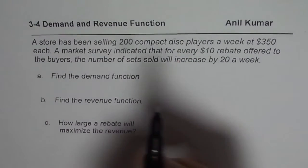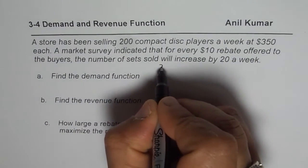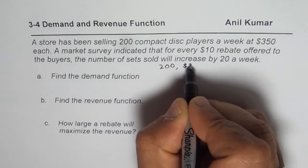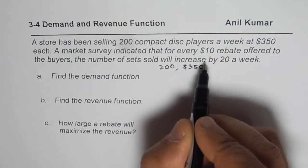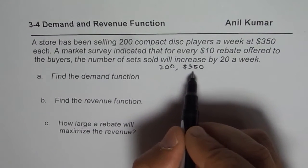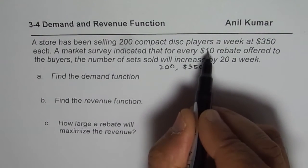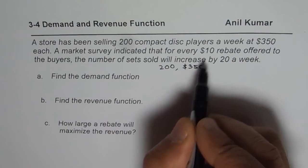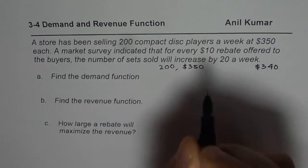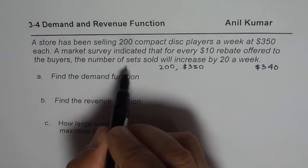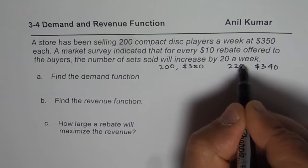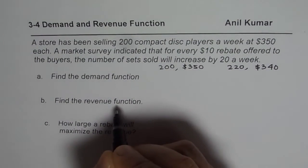What we are given is that 200 discs are being sold when the cost is $350. Now if a rebate of $10 is given, that means the cost is reduced from $350 to $340. If the cost is reduced to $340, then the sales go up by 20 — meaning you sell 220 compact discs. So those are our two coordinate points.